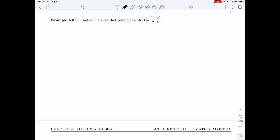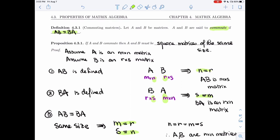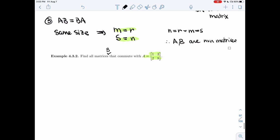Alright, so let's do this example. Example 4.3.2, I'm asked to find all matrices that commute with this specific matrix A. Let me give that matrix a name, so find all matrices B that commute with A, which is 1, 3, 2, 8. By the last proposition that we just proved, we know that if they commute, they must be squared of the same size, so A is squared, that's good.